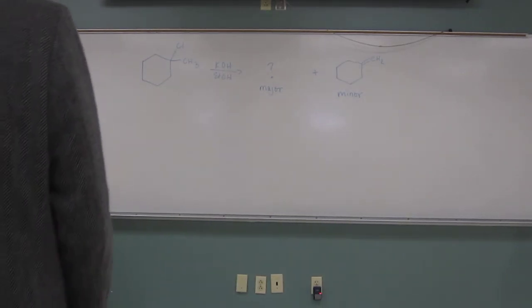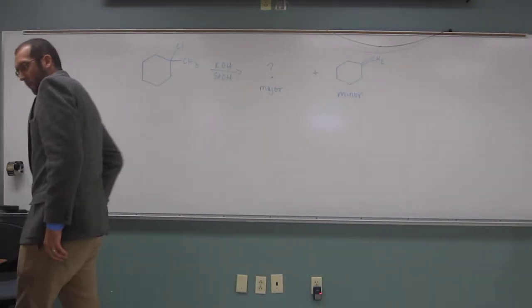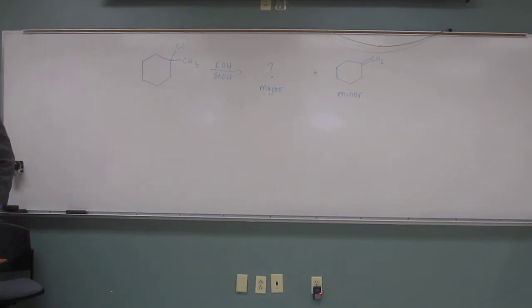So this is, I believe this is the last one, number 5 on the quiz that I think a few people wanted me to go over. So the question says, for the following E2 reaction, so that's a helpful hint, remember E2, that's a one step reaction. So propose a structure for the major product and mechanism for the minor product in the reaction.